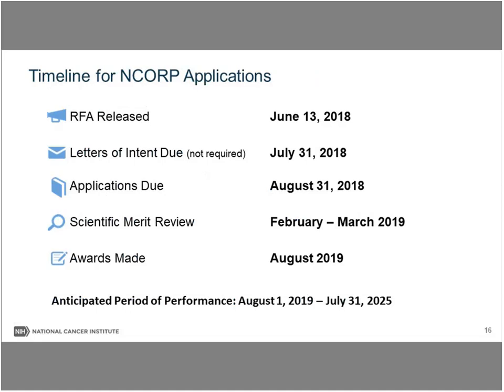A few timeline reminders: the RFA was released in mid-June. The letter of intent is due on July 31st. If you choose to submit a letter of intent, you will receive a notice that we have received it. Applications are due on August 31st. Late applications will not be accepted. Our intention is for the scientific merit review to occur in February or March of 2019, and our hope is to make awards in August of 2019. Your six-year period of performance would be August 1st, 2019 through July 31st, 2025.